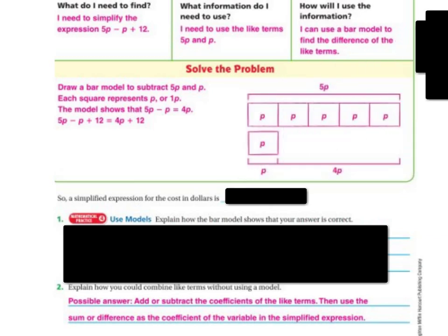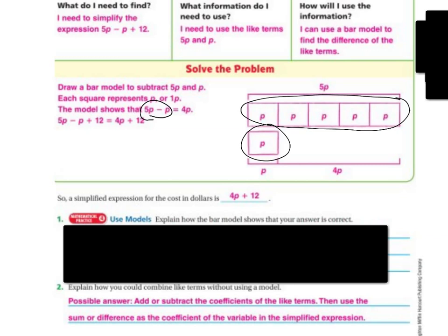So here's my model. So I have my 5P right here, and then I have my 1P. So if I simplify the expression, and remember it's 5P minus P, so then I'm going to get 4P because 5 minus 1 is 4, plus the 12. So the simplified expression, the cost in dollars would be 4P plus 12.